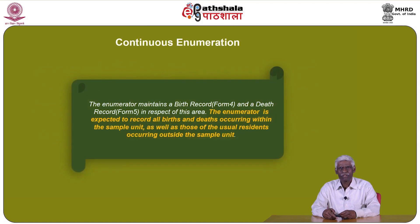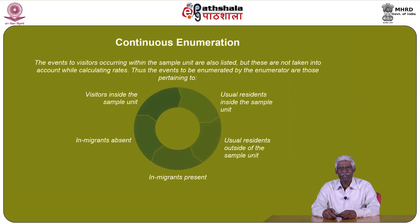The next focus is on continuous enumeration. The enumerator maintains a birth record (Form 4) and a death record (Form 5) for this area. The enumerator is expected to record all births and deaths occurring within the sample unit as well as those of usual residents occurring outside the sample unit. Events to visitors occurring within the sample unit are also listed, but are not taken into account while calculating various rates. The events enumerated include: usual residents inside the sample unit, usual residents outside the sample unit, in-migrants present, in-migrants absent, and visitors inside the sample unit.